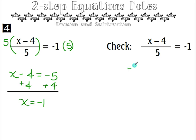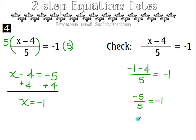Checking: negative 1 minus 4, divided by 5, equals negative 1. Negative 1 minus 4 is negative 5, and negative 5 divided by 5 is negative 1. So negative 1 equals negative 1 — that checks. Hopefully this was helpful when working with division and subtraction equations, and you are ready for your assignment over this topic. Good job.